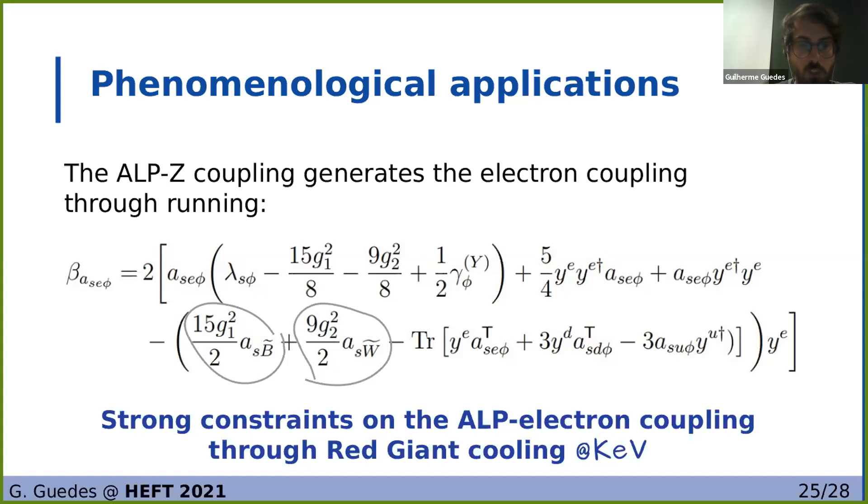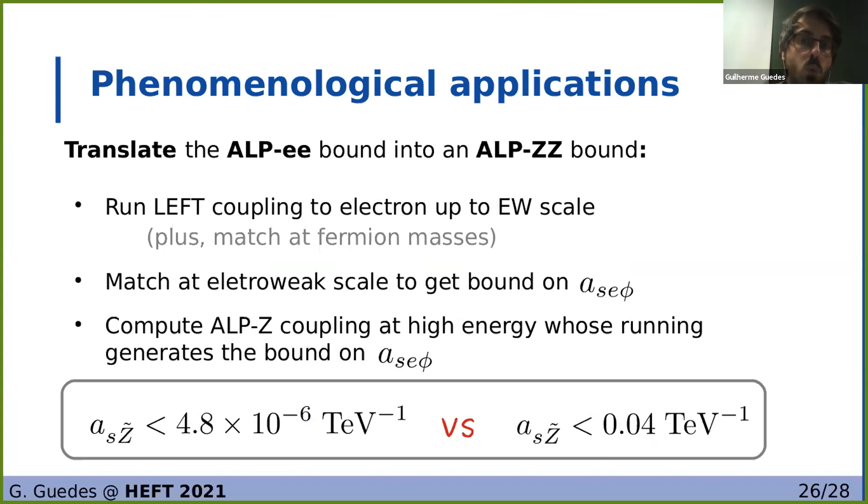And the coupling of the ALP to electron is very constrained, namely through the anomalous red giant cooling, which is at the keV scale. So to translate this bound into a bound on our UV coupling to the Z, what we need to do is see which value of the coupling in the UV, which for this particular case we will set the UV to be at 10 TeV, will generate the coupling to the electron at the keV scale, always matching at the electroweak scale and at the fermion masses. And what we see is we get a result that's four orders of magnitude better than the direct constraint. Obviously this must be taken with a grain of salt because this is an indirect bound and it makes assumptions on the underlying model, so it will never substitute the direct bounds. However, it can help us get much stronger constraints for specific UV completions for the ALP.